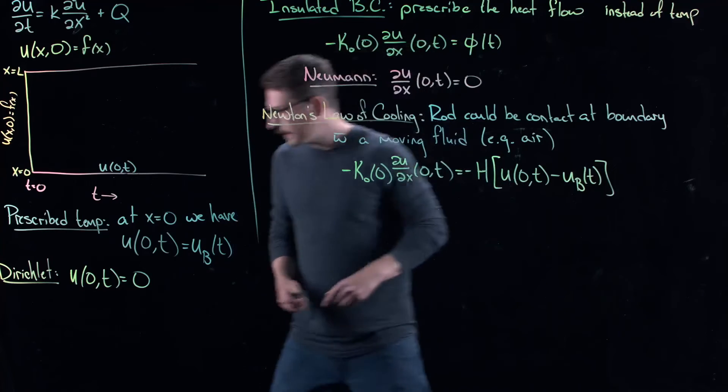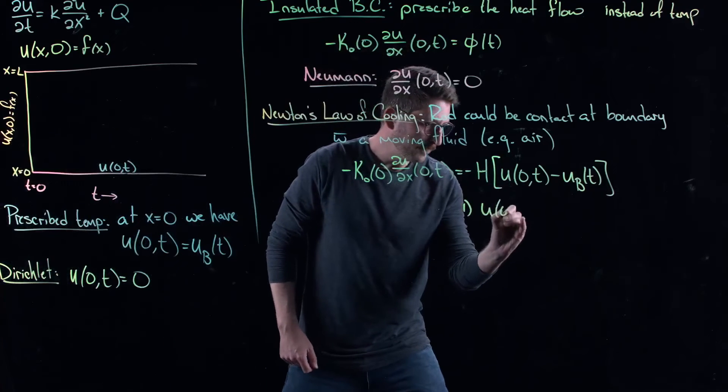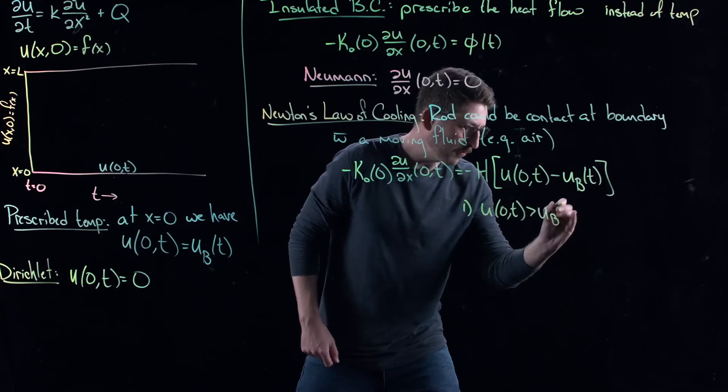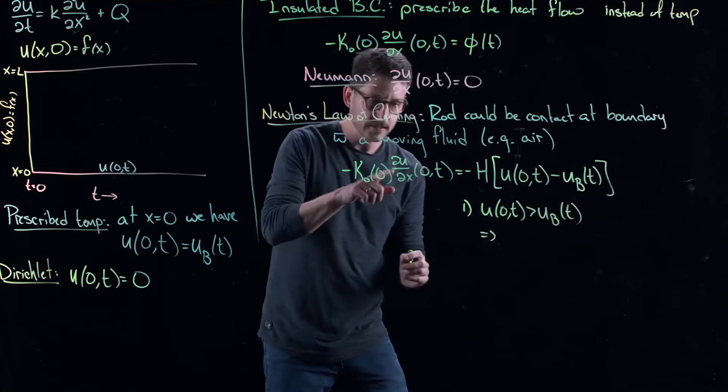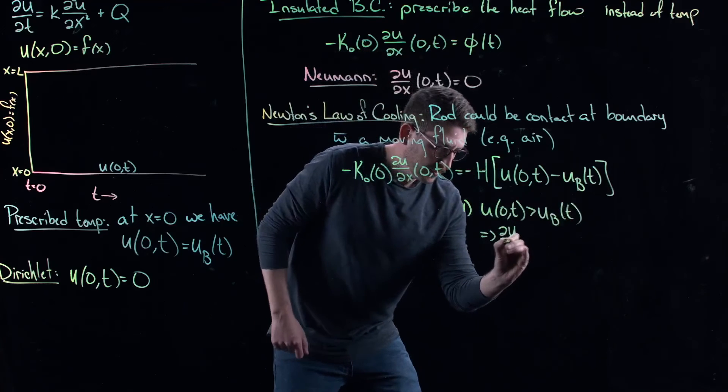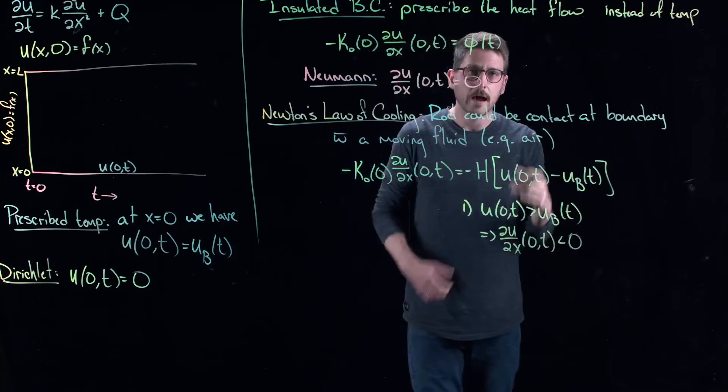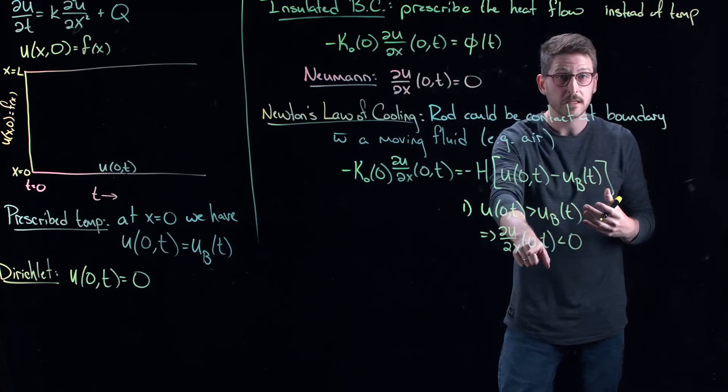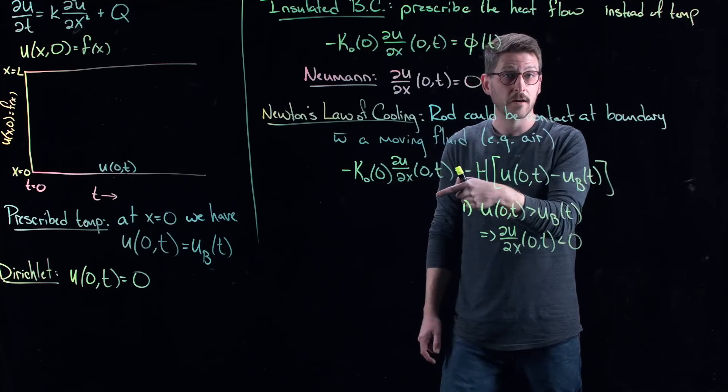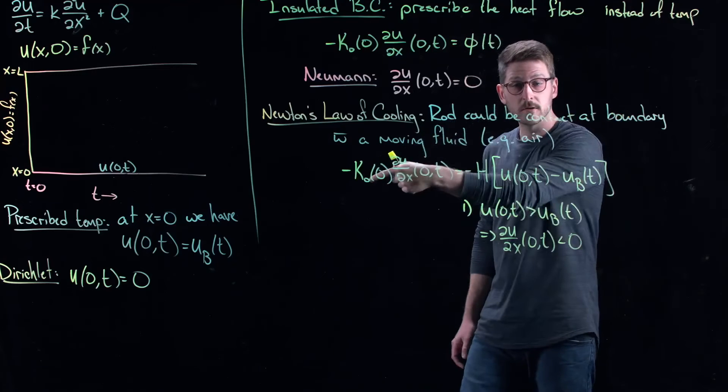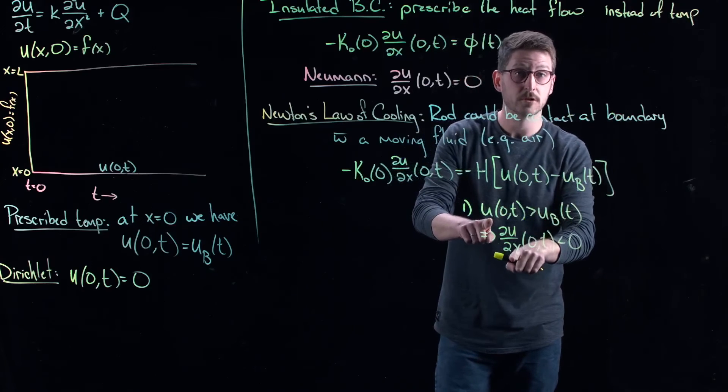Now, first of all, let's look at a condition here. If my rod is hotter than the air, then this implies essentially that this is negative. Now, you might have to remind yourself in the previous video what the flux means, but essentially this means that you're decreasing the temperature of the air. So you're losing heat to the boundary here, so essentially the air is cooling you off. Your temperature is going down.